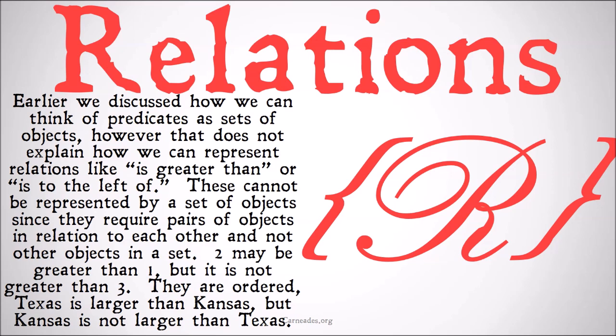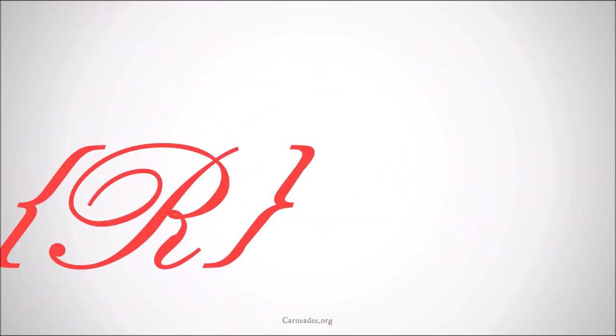Two may be greater than one, but it's not greater than three, so I can't just have a set of things that are 'greater than' because you need two objects paired together. They are ordered. Texas is larger than Kansas, but Kansas is not larger than Texas — you can't necessarily switch them around. So relations are going to require a little bit different machinery to represent.